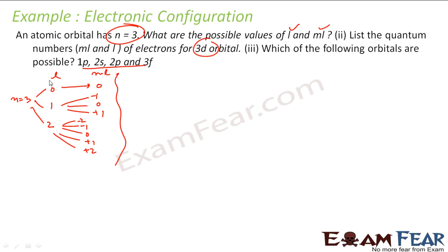N can be 3; L can be 0, 1, or 2; and ML takes all corresponding possible combinations. So (3, 0, 0) is one possible combination; (3, 1, −1), (3, 1, 0), and (3, 1, 1) are possible combinations; (3, 2, −2), (3, 2, −1), and so on are also possible combinations.